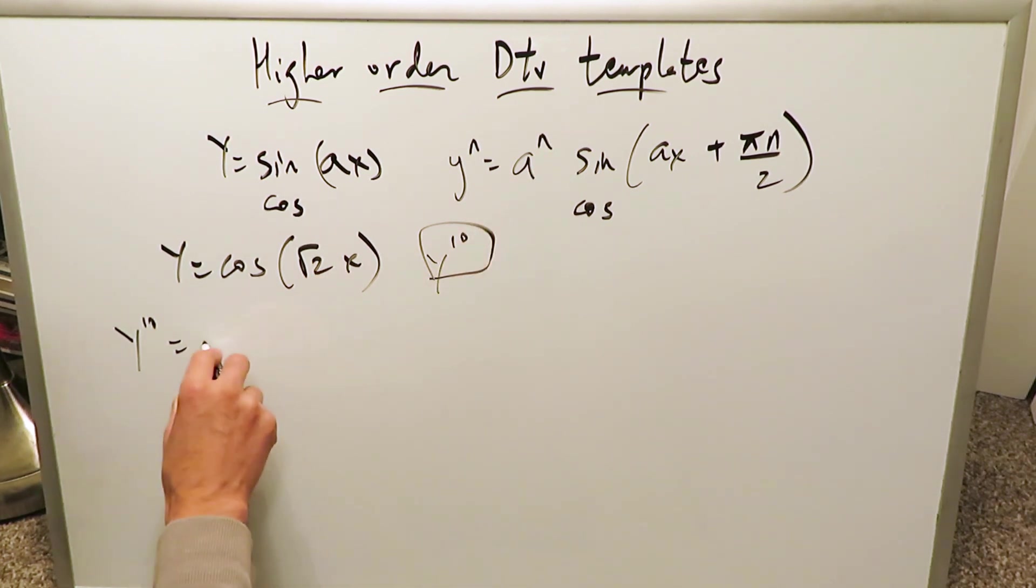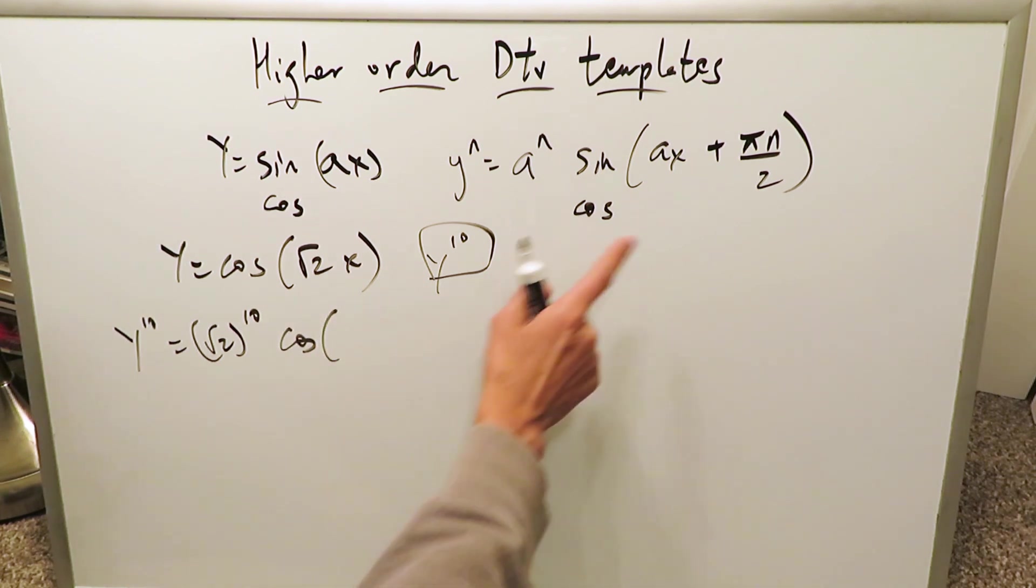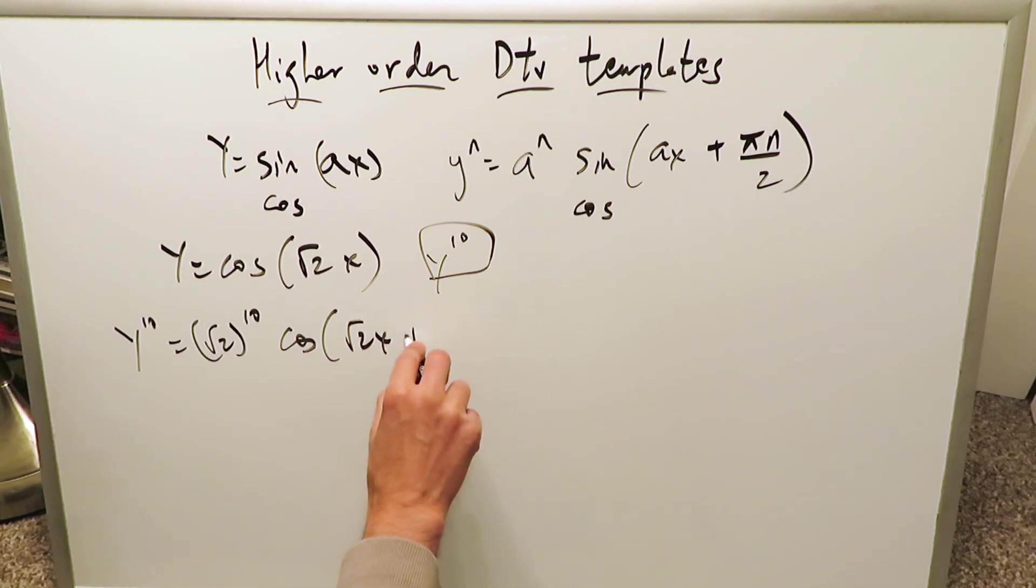a to the power of n. Here's my a. √2 to the power of 10 and then you'll have cosine and then obviously you're running everything through there. √2x plus 10π/2. What's 10π/2? Well it's 5π. So why don't we just write 5π.